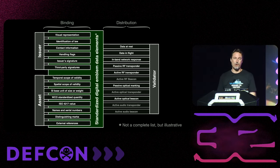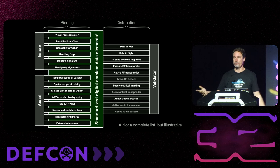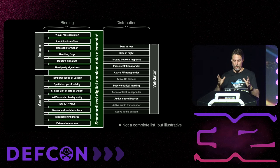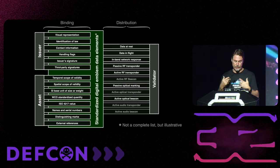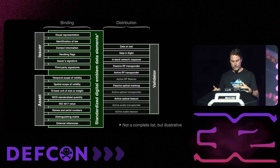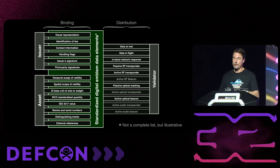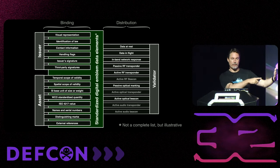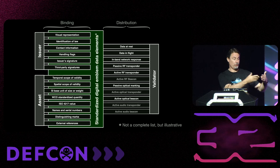We also have SI base units of size and weight, and the World Customs Organization has all of this well-standardized already for paperwork — crate number three of a shipment of five, how many barrels, standardized packaging. We don't need to reinvent any of that. Then names, serial numbers, distinguishing marks, external references — like a link to a photograph of the thing so you can look at a picture and ask: does that look like the thing in front of me?